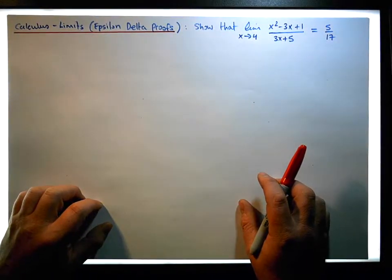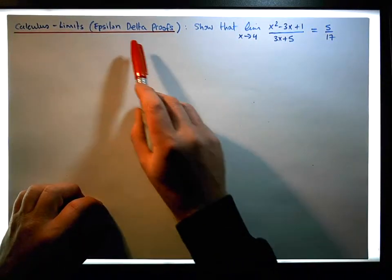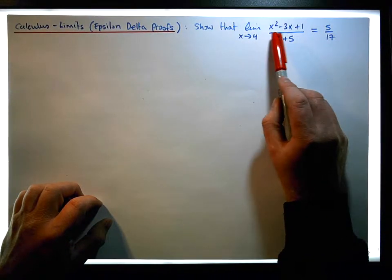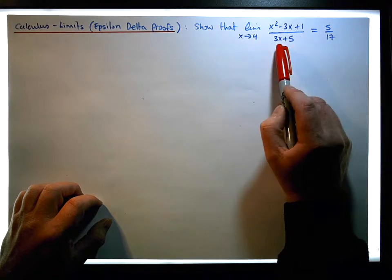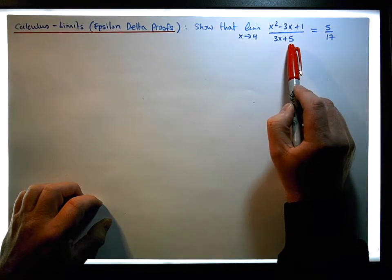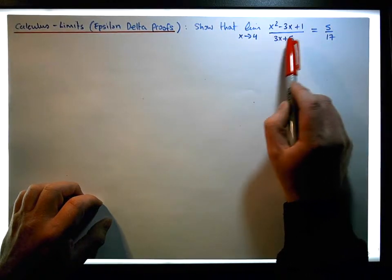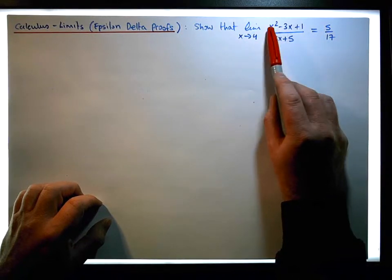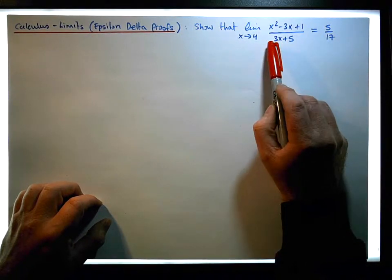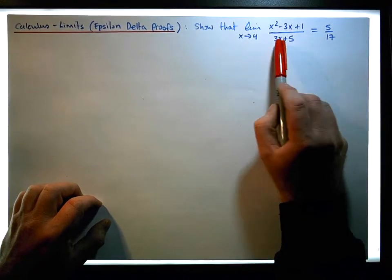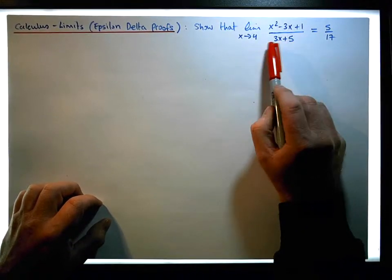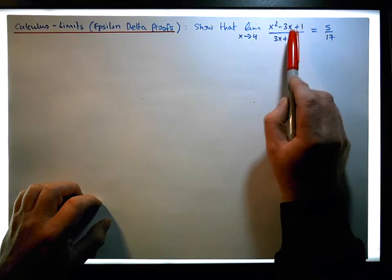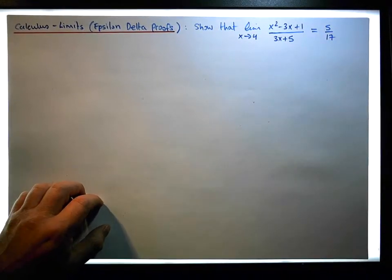What we're going to do using an epsilon-delta argument is to show that the limit of this rational function, x squared minus 3x plus 1, all over 3x plus 5. It's an insoluble rational function, which means that when we factor the numerator, there's no commonality between the numerator, its factors, and the denominator. The limit of this particular rational function as x tends to 4 is in fact equal to 5 seventeenths.